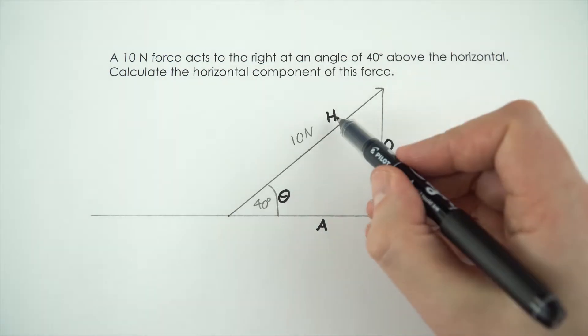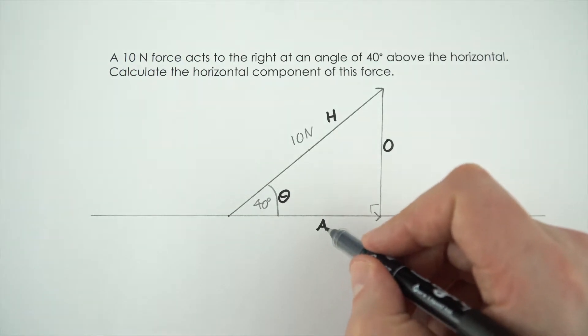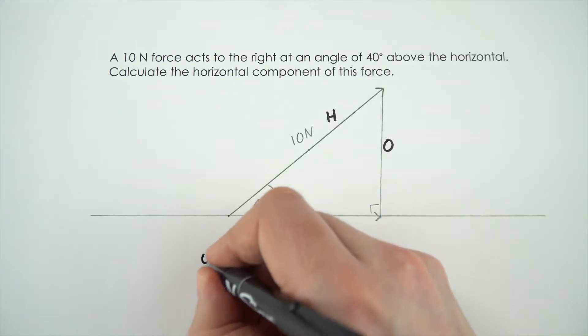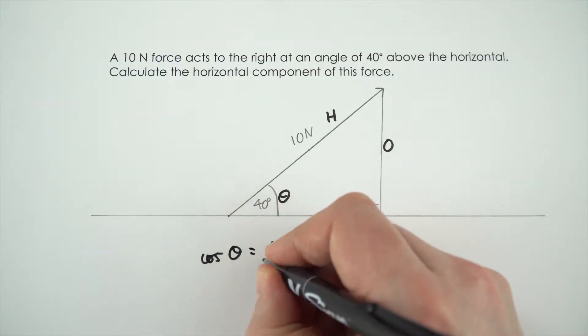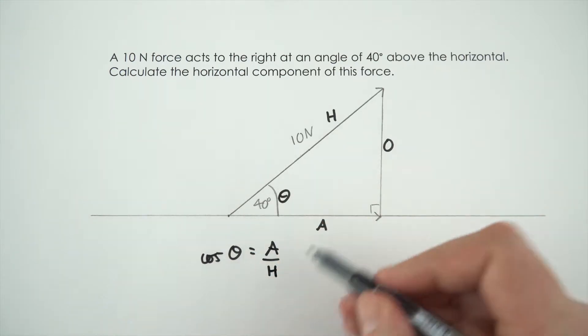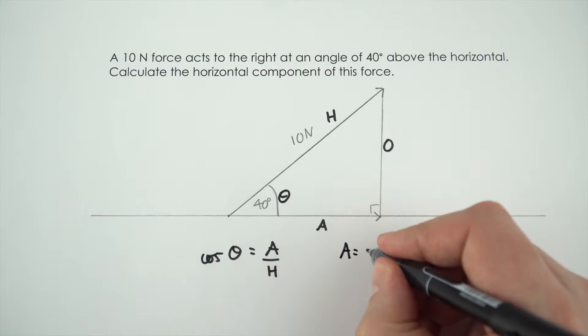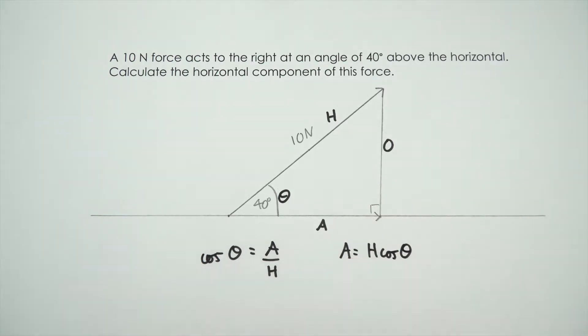What we know is the hypotenuse, we know theta, and we want to find the length of this adjacent side. So if we've got these three things here then we're going to be using cos theta. Cos theta is equal to the adjacent side divided by the hypotenuse. We want to know the adjacent side so that means the adjacent side is equal to h cos theta. I've just rearranged this by putting h at the top.